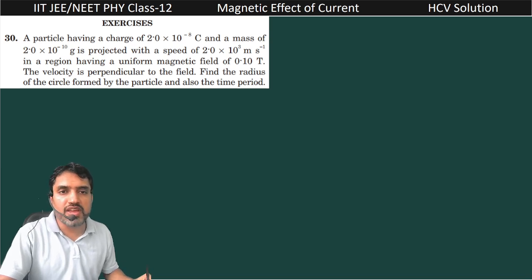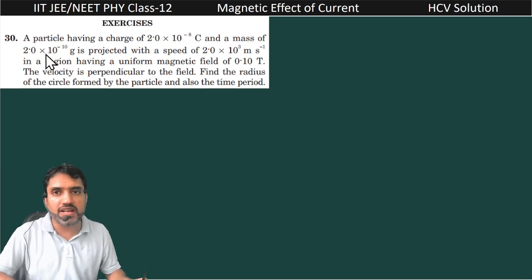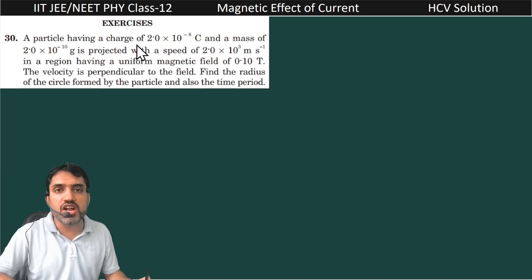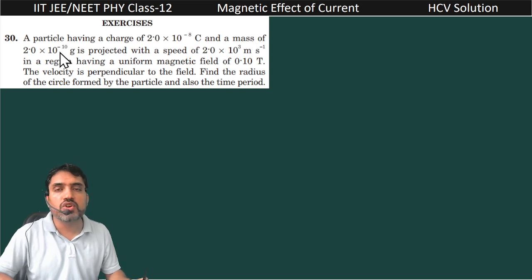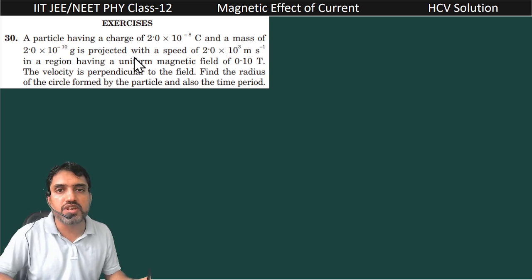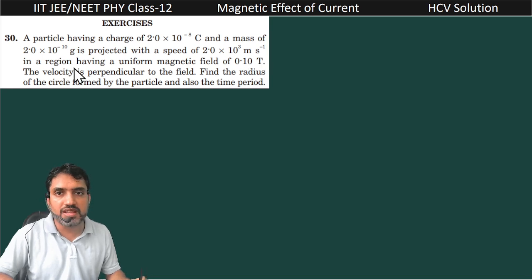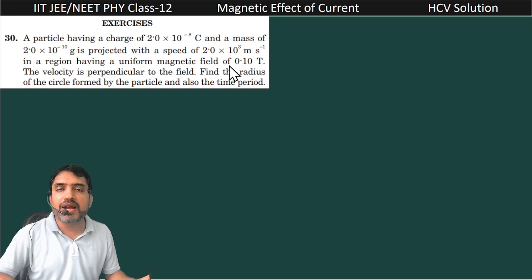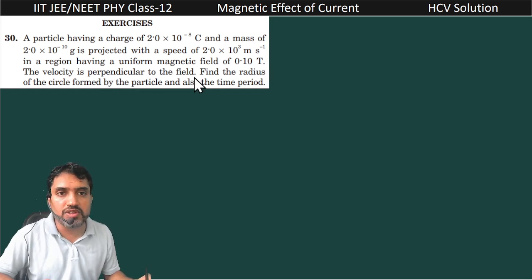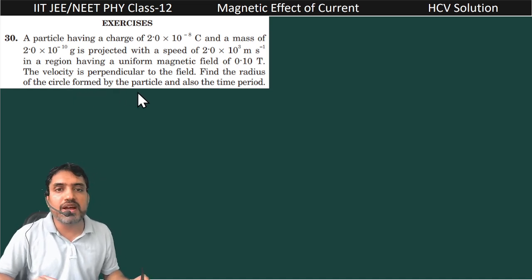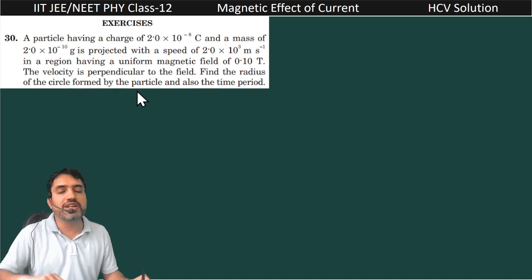Hello my dear students. Now we are having the next question, that is question number 30. A particle having a charge 2 × 10⁻⁸ coulomb and a mass 2.0 × 10⁻¹⁰ gram is projected with speed 2 × 10³ meter per second in a region having a uniform magnetic field of 0.1 tesla. The velocity is perpendicular to the field. Find the radius of the circular path formed by the particle and also the time period.